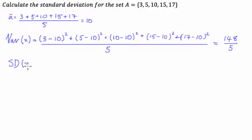of x, which is also sometimes denoted as σ, is equal to the square root of the variance of x.